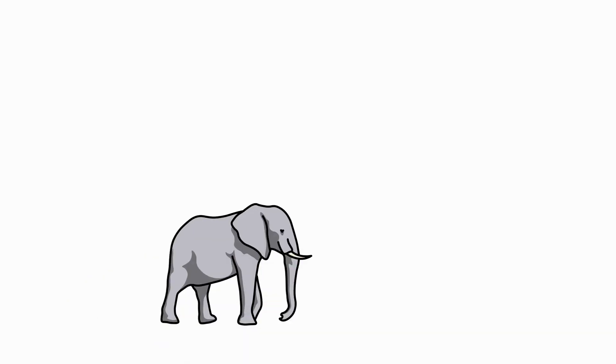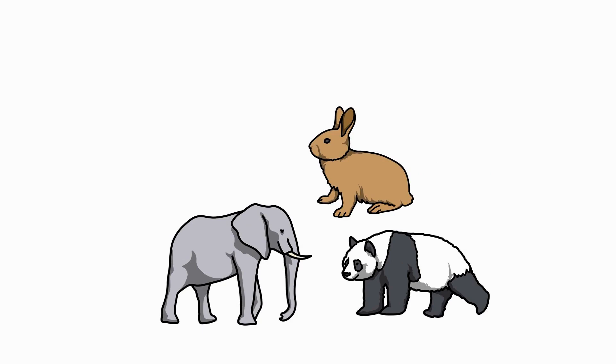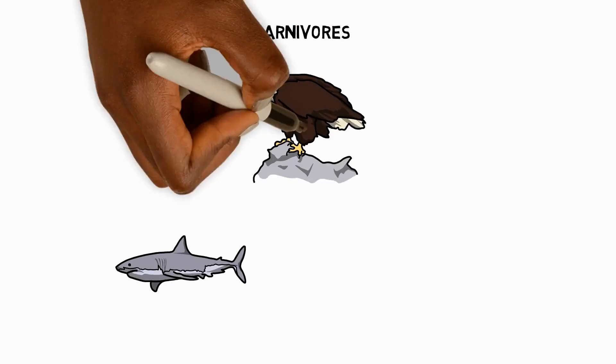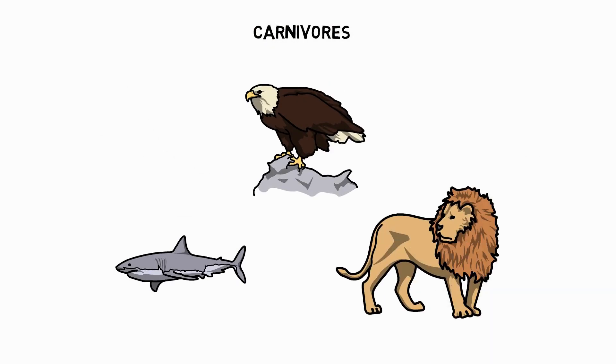We can classify animals into different groups based on their diets. Animals that mostly eat plants are called herbivores. And then we have carnivores who mostly eat meat. Sharks, eagles, and lions are some examples.